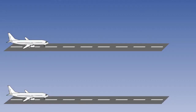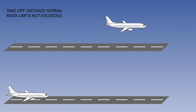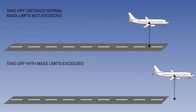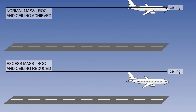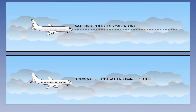There are several effects of exceeding mass limitations. Exceeding the mass limits for take-off and landing would result in increasing the limiting take-off and landing distance requirements. A further effect of exceeding mass limits will result in the rate of climb and ceiling or flight level being reduced. Another effect will be to reduce the aeroplane's range and endurance.